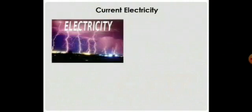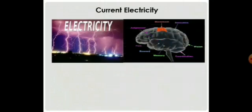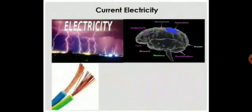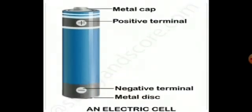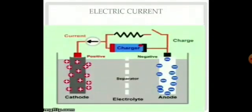A large current flows when lightning takes place from a cloud to the ground, while a sensation is felt by us due to a microscopically small current flowing to the brain. Current is produced by the flow of both negatively and positively charged particles.